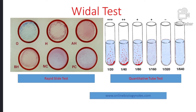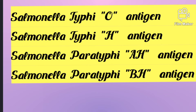Whenever we see the Widal test report, we come across certain terms like S. typhi O, S. typhi H, S. paratyphi AH, and S. paratyphi BH. These are all nothing but the antigens. S. typhi means Salmonella typhi; S. paratyphi means Salmonella paratyphi.